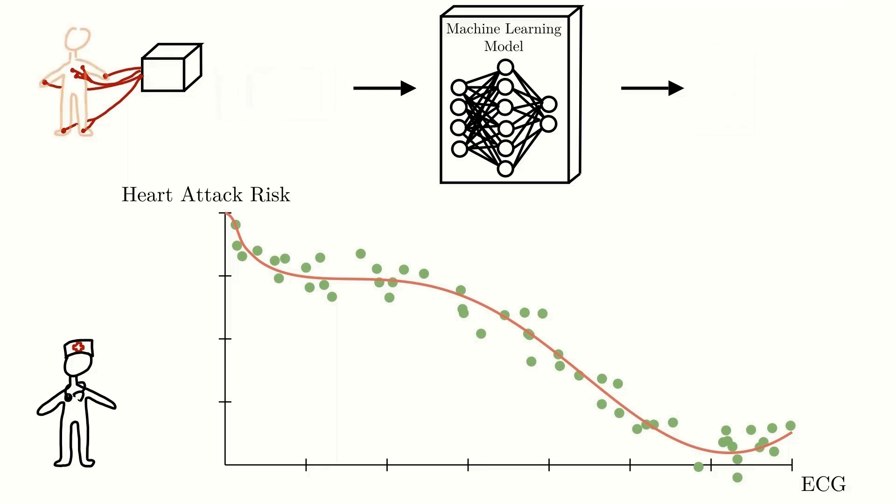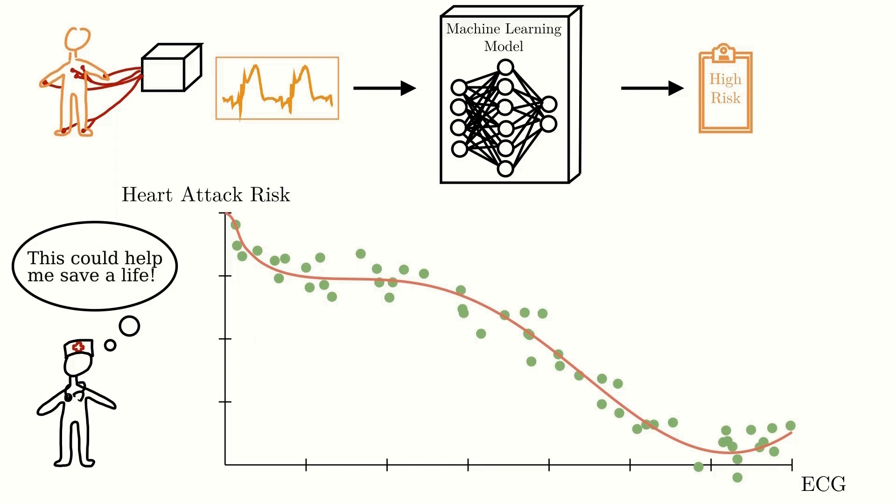For a different patient, the neural network could instead predict a high heart attack risk, like this. This could thus be used to help discover patients who have heart attacks so that they can get the necessary care, thus using machine learning to help doctors save lives.